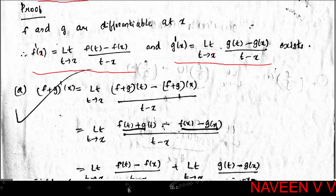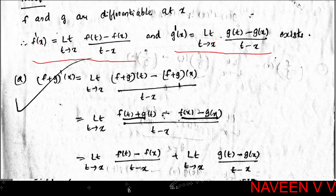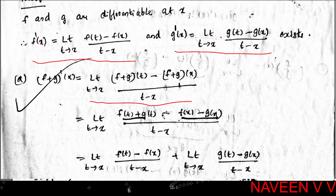To show f+g is differentiable at x, we need the limit as t→x of [(f+g)(t) - (f+g)(x)] / (t - x) to exist. By definition, (f+g)(t) = f(t) + g(t) and (f+g)(x) = f(x) + g(x).